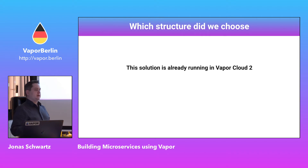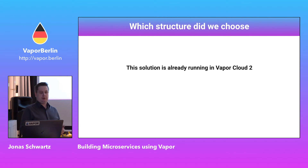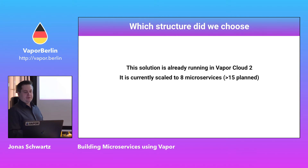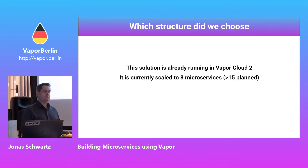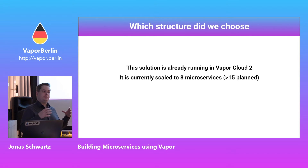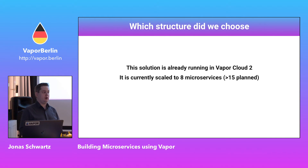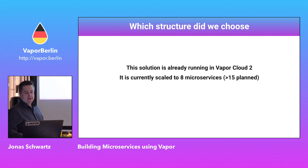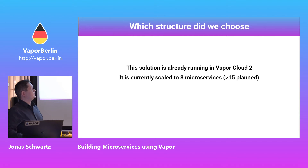This solution is running in Vapor Cloud 2, which is a huge new version of our cloud service we are going to publish soon. It's currently in alpha and we have around eight microservices running. When finished, we're going to have over 15 microservices. The microservices are not directly dependent on each other — only on each other's endpoints. This makes it really easy for us to make huge breaking changes without breaking anything in our existing code base.